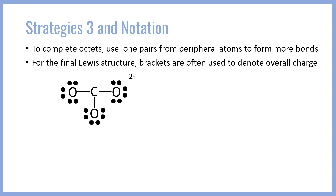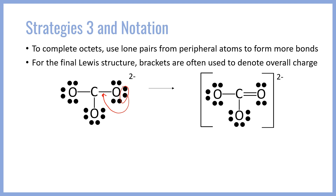What we're going to need to do is take a lone pair from one of the oxygens — it doesn't really matter which — and fold it into the carbon. So we take that lone pair and fold it to form a double bond at that position. That gives us the final structure for CO3 2-, where the overall charge of 2- is indicated by the brackets around the structure.